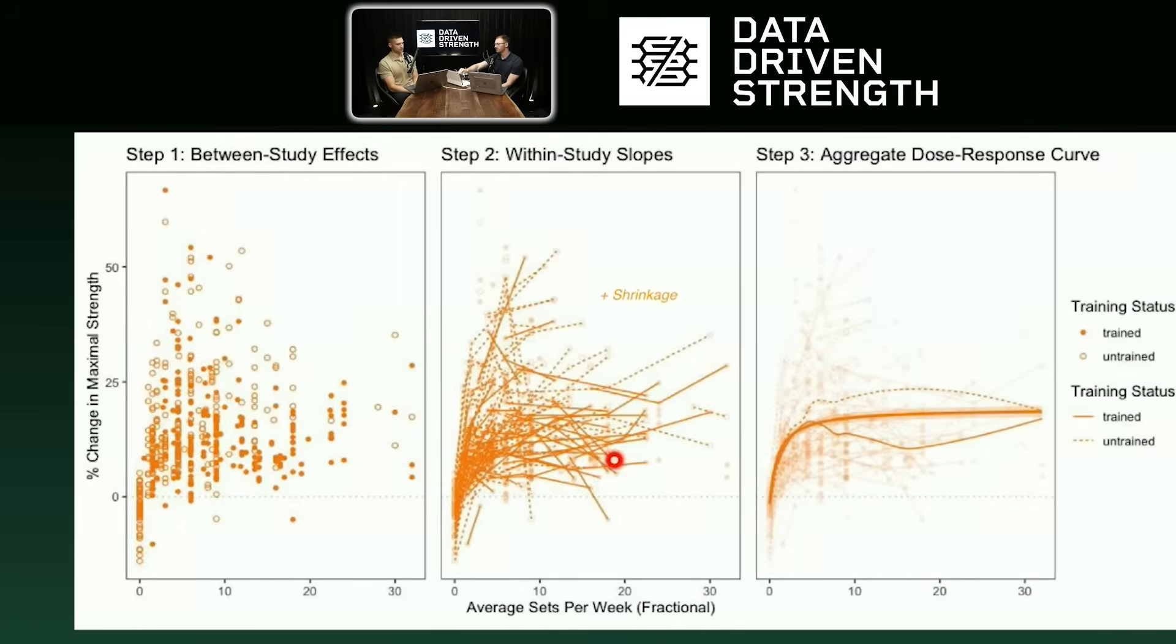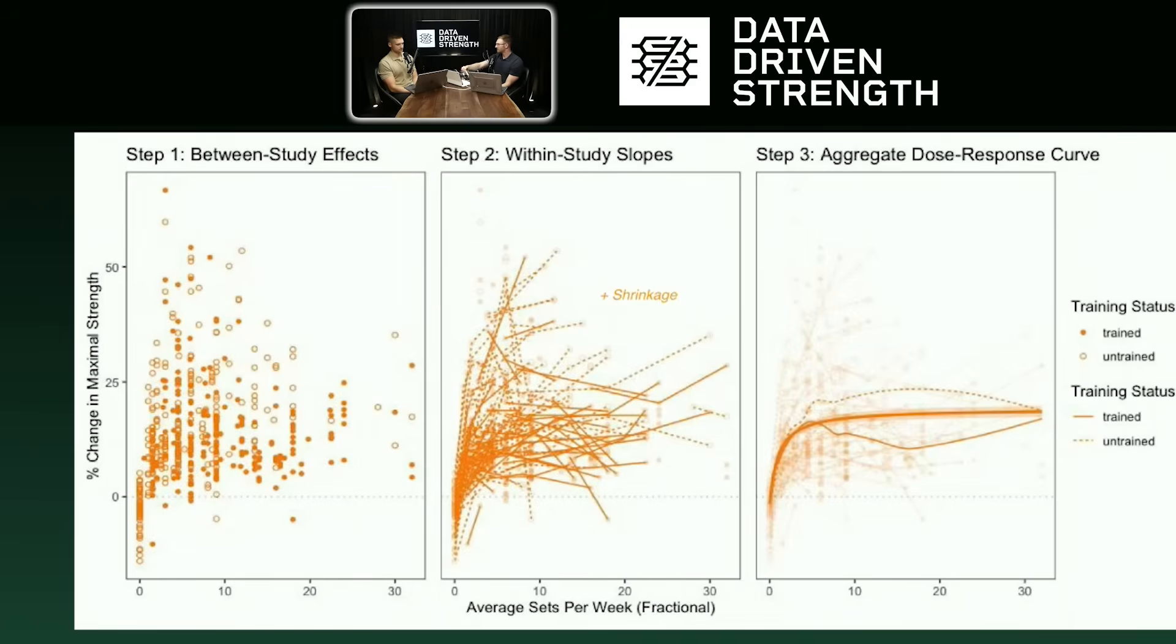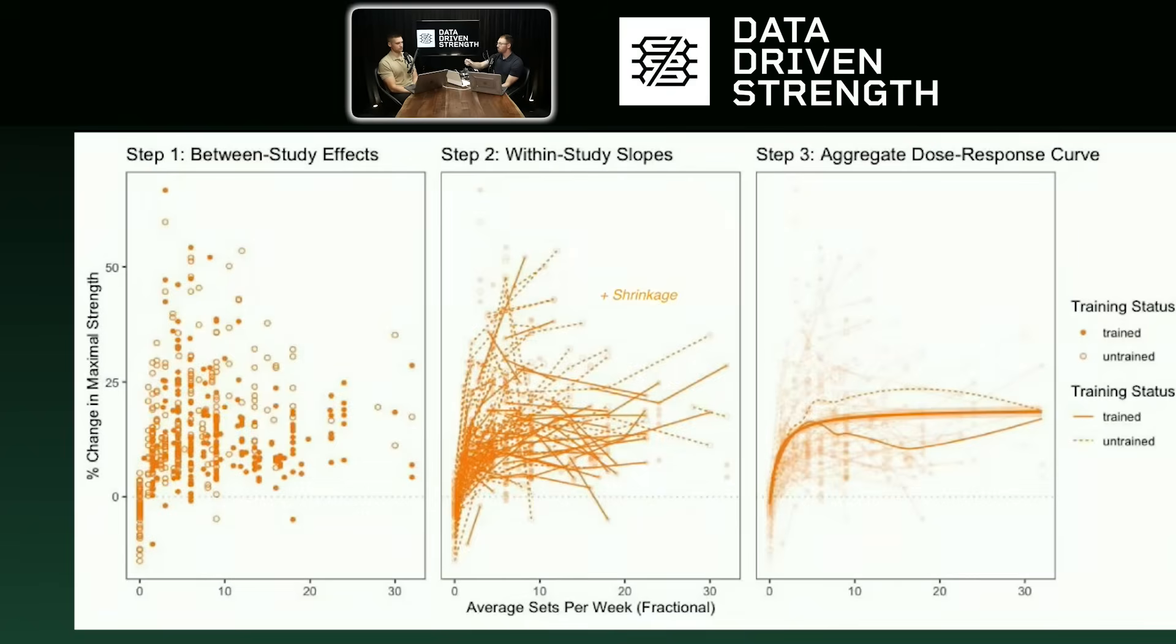And those effects have different levels of volume. And so what you can do is you can create what are called within-study slopes that are representing the dose-response relationship of each effect in a study in isolation. So that's essentially allowing for the within-study comparison of volume level A versus volume level B within a given study where all the other variables in that study are accounted for. Load, proximity to failure, intervention, training status, all those things are comparable, which is why it's advantageous to calculate those within-study slopes. Then you can see I have this up here, this little thing called plus shrinkage. And so essentially what a meta-regression is going to do, it's going to say, hey, all of these individual slopes, because you're estimating those in isolation, it's actually counterintuitive, but having information across other studies can actually provide a better estimate of that study slope in isolation.